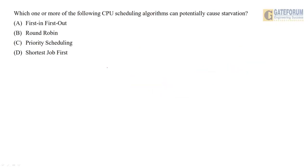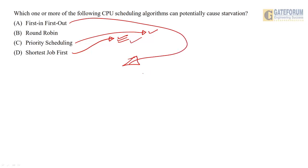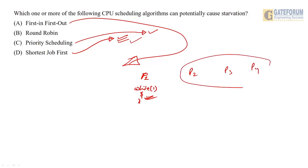The next question: which one or more of the following CPU scheduling algorithms can potentially cause starvation? In Shortest Job First, there are chances of starvation because longer jobs wait indefinitely. In priority scheduling, low priority processes wait for a longer time, so it also causes starvation. Even in First In First Out, if the first process executes for infinite time or goes into an infinite loop, the remaining processes may starve. So the correct options are A, C, and D.